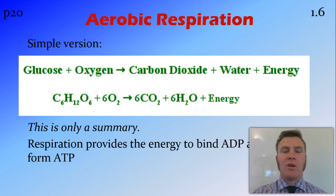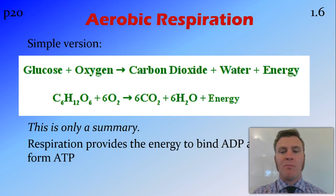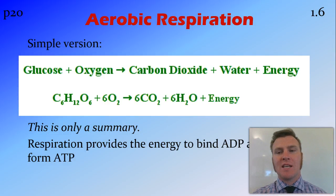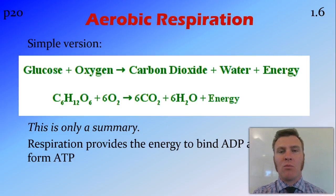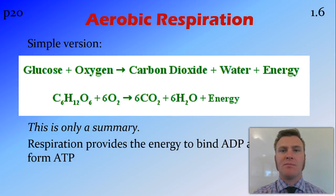This process occurs in the mitochondria, binding adenosine diphosphate to a phosphate to form adenosine triphosphate — and that's where the energy comes from. As byproducts we have carbon dioxide and water, and you breathe out the carbon dioxide as a waste product.